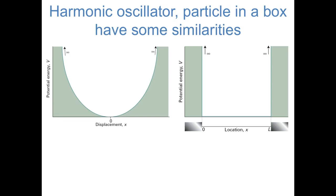Even though the harmonic oscillator and particle in a box models apply to different types of motion, they have some significant similarities. This picture shows the potential energy operators for the two systems, with the harmonic oscillator on the left and the particle in a box on the right. In a sense, both systems are just potential energy wells, where the potential energy at the center is low and the potential energy on the sides goes to infinity. So even though the shapes are different, we expect the wave functions for these two systems to have some similarities.